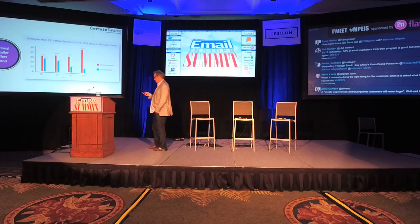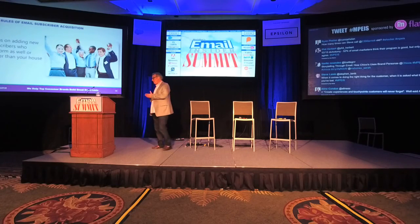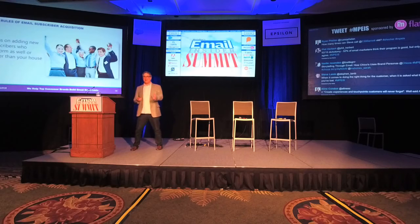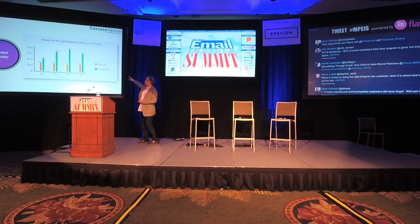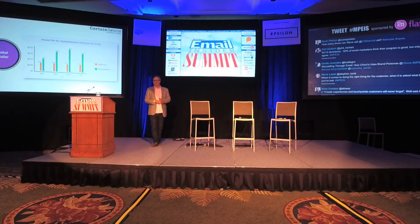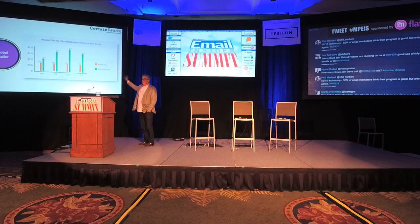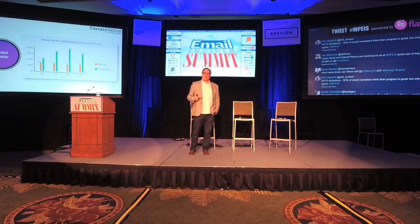That's an example of the optimization. Final rule: focus on adding new subscribers who perform as well or better than your house file. Why would you want to drag down the performance of your house file by adding people who aren't as good? Clients ask, 'How do I know if they're as good or better?' — again, that's the optimization and tracking we do. Here's actual client data: the house file is 8 cents revenue per email over a four-month period, and the green line shows the acquired subscribers going from 11 cents to 19 cents to 21 cents — beating the house file every month. So everyone they added from us were better customers than those already there, and over time the performance of their entire house file gets raised.